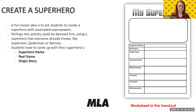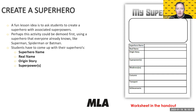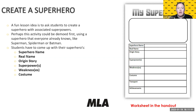Their origin story — whether they were bitten by a bat, come from the planet Krypton, or like Batman, whose parents were killed. Their superpower or superpowers. Weaknesses — just like Superman has kryptonite. And the costume — they could describe the costume. The box at the top of the worksheet is for them to draw it.